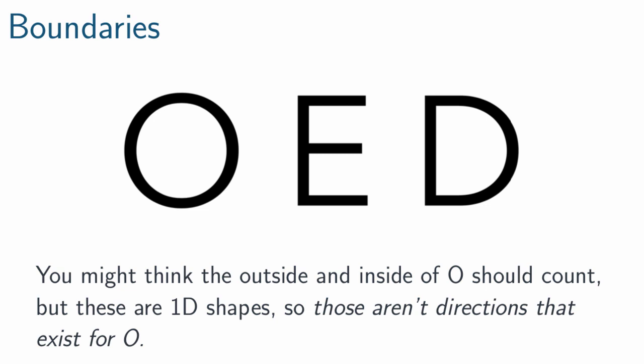Now, something that I hear very frequently is that with the letter O, the inside surface and the outside surface of it should count. Here's the thing, though. These are 1D shapes. When we think about 1D world, going inward and outward are not directions that even exist for this letter, and that's hard to conceive of for any dimensional space except three-dimensional space. But there's no such thing as inward or outward. Therefore, those surfaces aren't really things that exist, and we can't count that as part of the boundary.